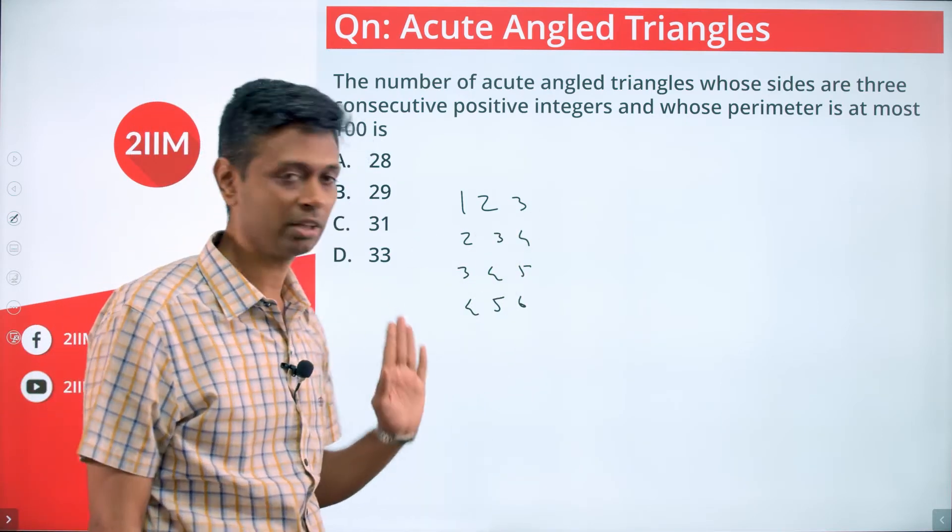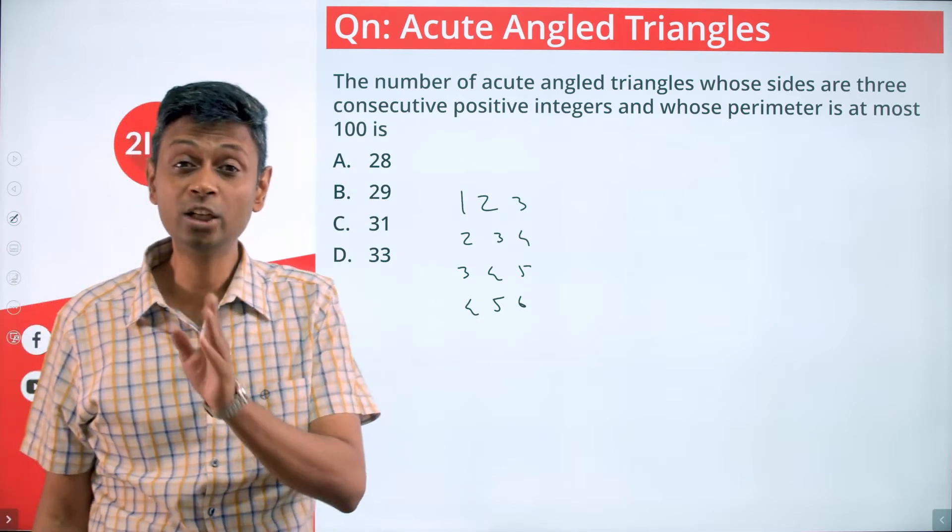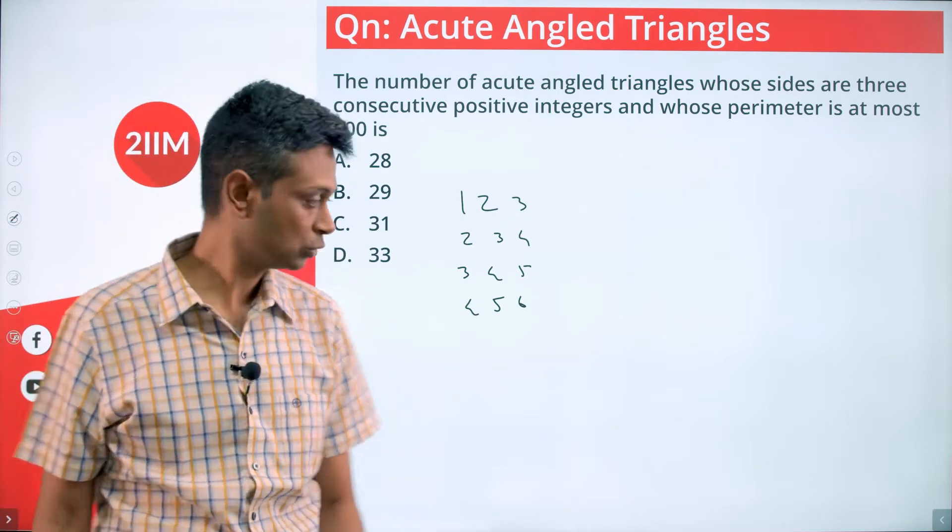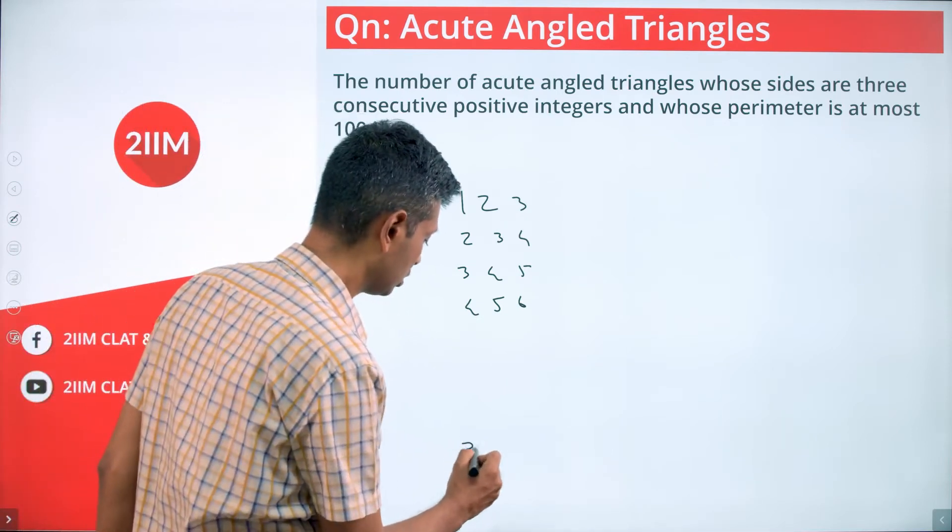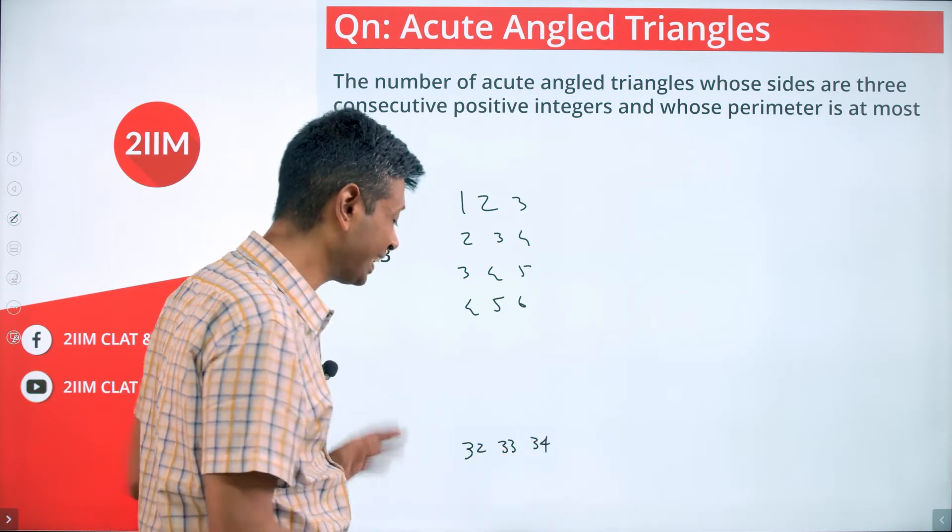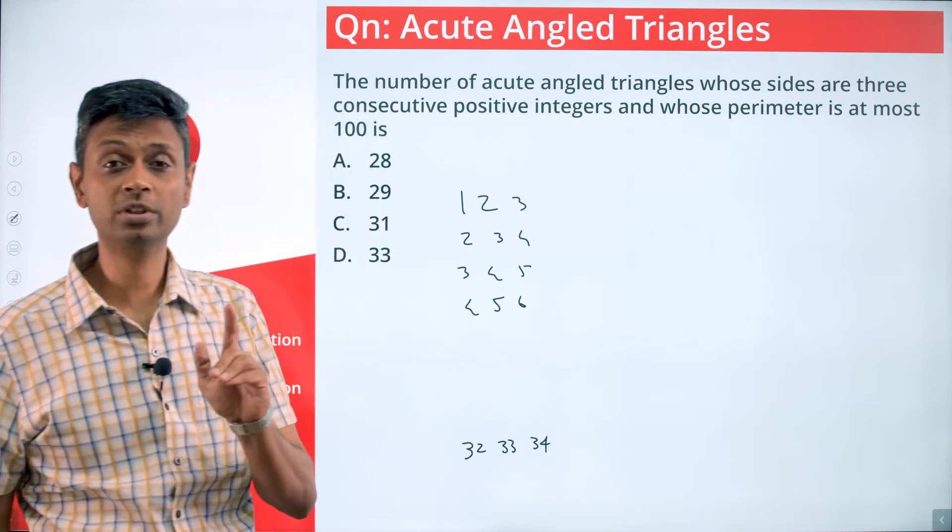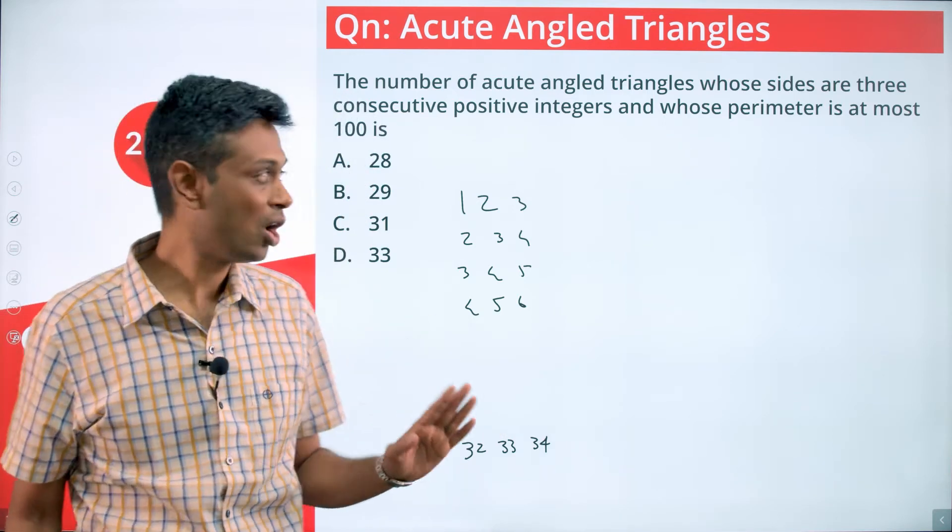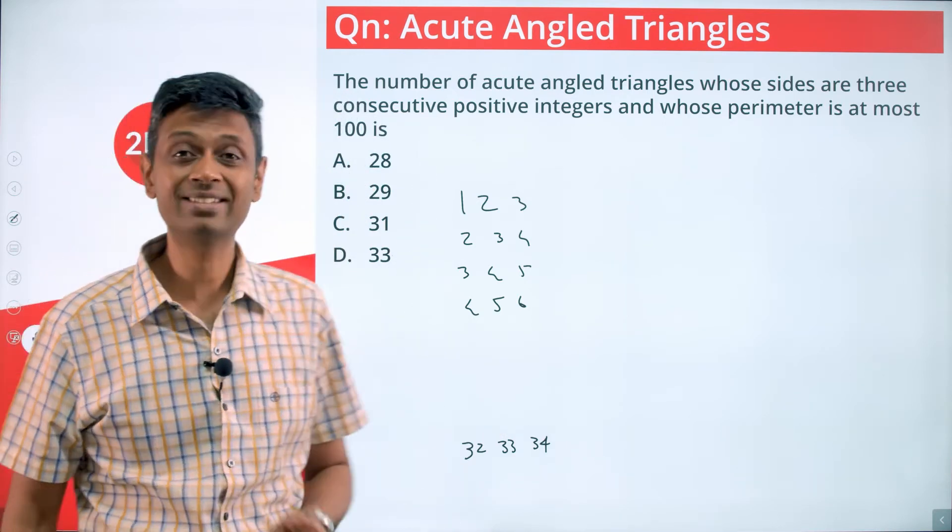Perimeter is three times the middle number. 33 times 3 is 99, so we can have 32, 33, 34. We cannot have 33, 34, 35 - that's 102. All of these are sets of three consecutive integers that add up to less than 100.